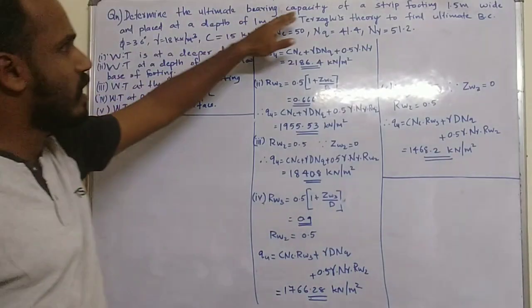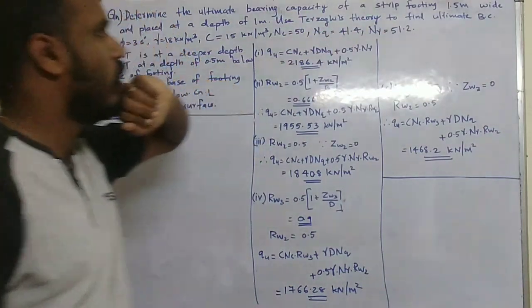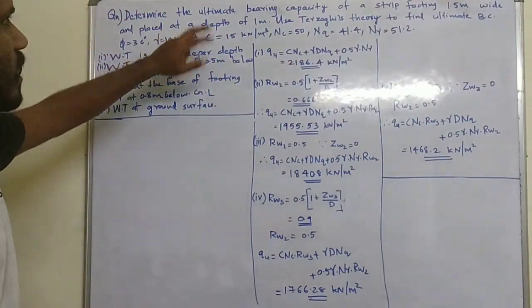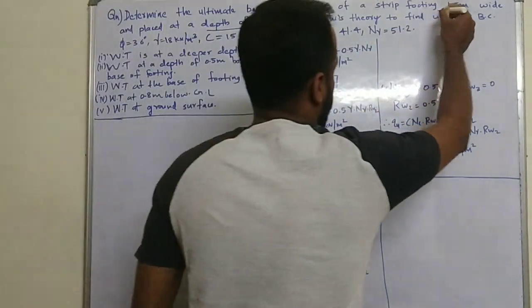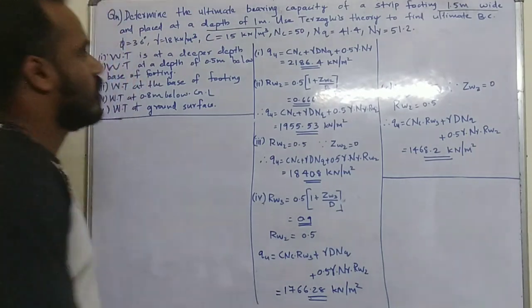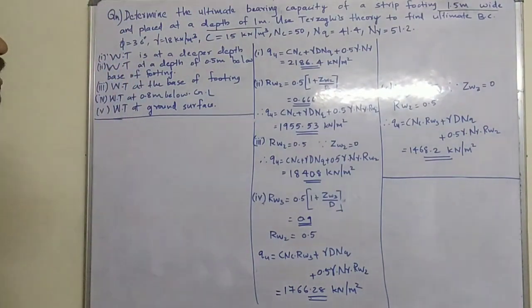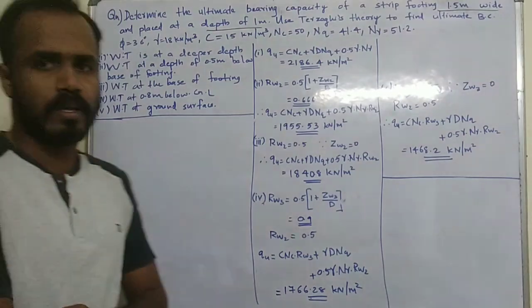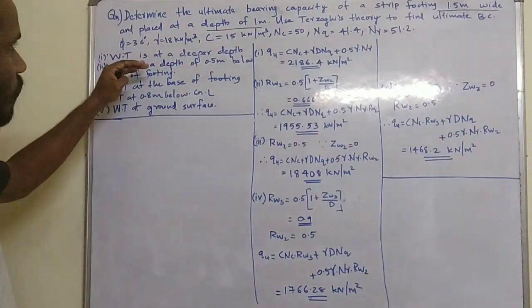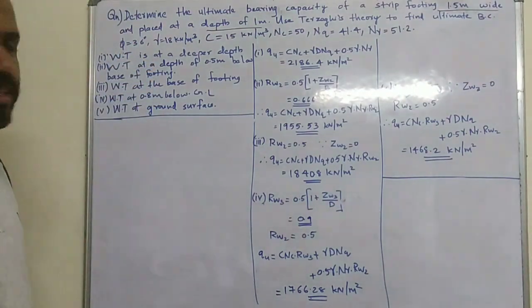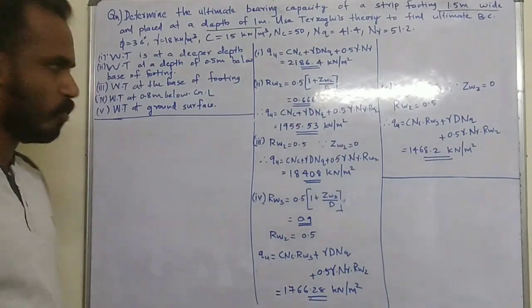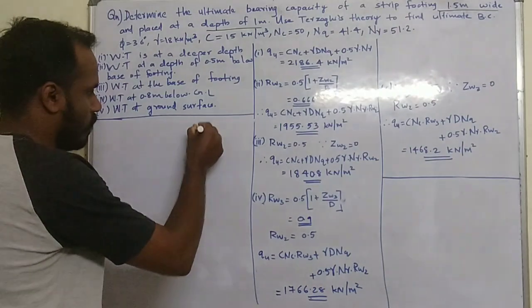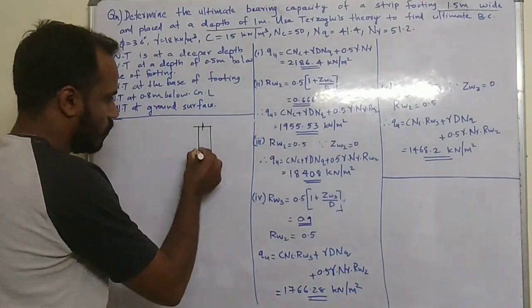Determine the ultimate bearing capacity of a strip footing 1.5 meters wide, placed at a depth of 1 meter. Using Terzaghi's theory, find the ultimate bearing capacity. If there is any water table, its position will be mentioned.